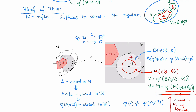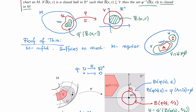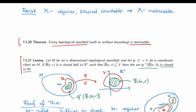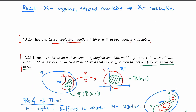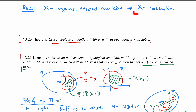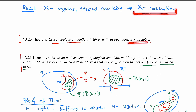Going back to the Urysohn metrization theorem: we have proved that every manifold is a regular space, and by definition every manifold is second countable. Therefore the Urysohn metrization theorem tells us that every manifold is a metrizable space, which is precisely what we wanted to prove.